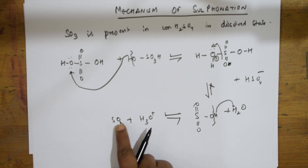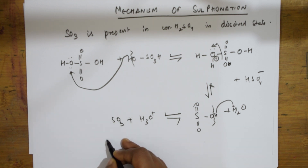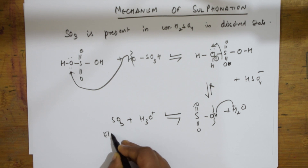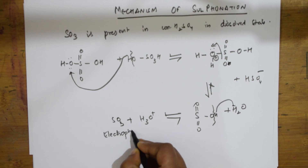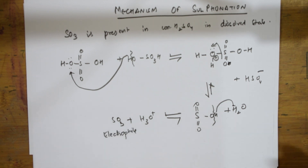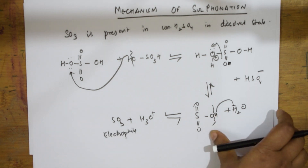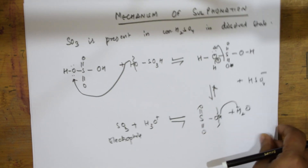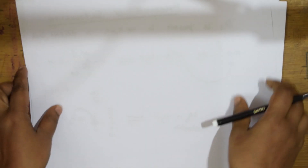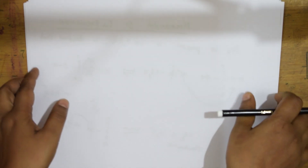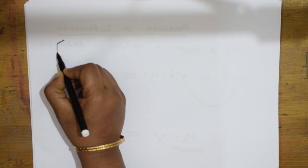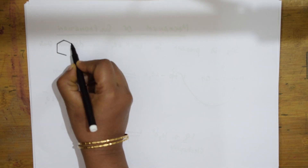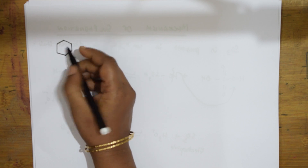SO3 acts as the electrophile in sulfonation. We now take this SO3 electrophile and show how it adds around the benzene ring.